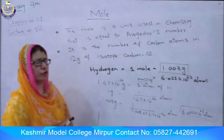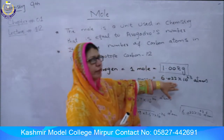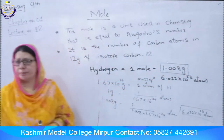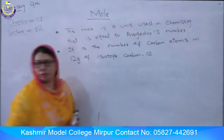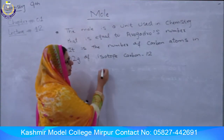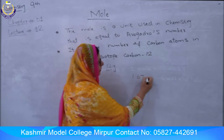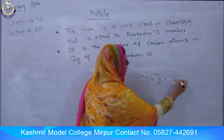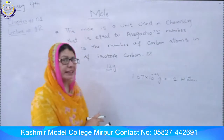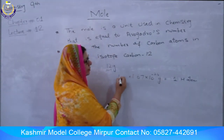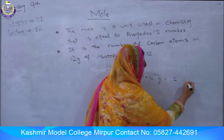It means that when we express the atomic mass of hydrogen in grams, the number of hydrogen atoms in that amount equals Avogadro's number. Similarly, for carbon: one carbon atom has a mass 12 times greater than hydrogen, so its mass is 12 × 1.67 × 10⁻²⁴ grams.